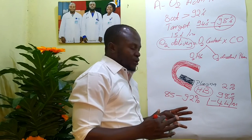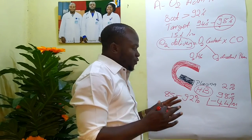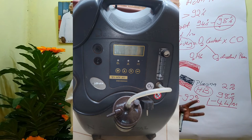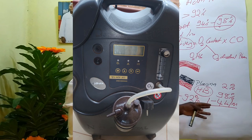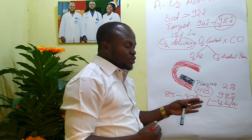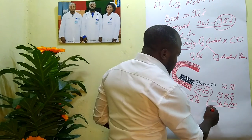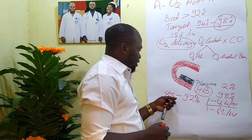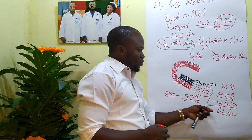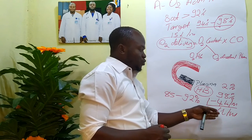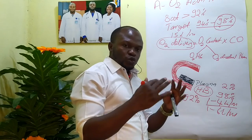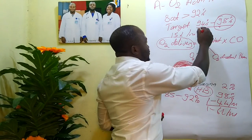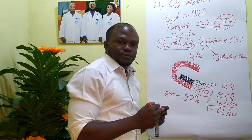Remember, the commonest source of oxygen in our facilities is the oxygen concentrator — in health centers, integrated health centers, and clinics. The oxygen concentrator can only give 1 to 6 liters per minute. So if a patient has a saturation of 85% to 92%, consider administering 1 to 6 liters per minute. You can use the oxygen concentrator and nasal prongs to achieve the target of 94% to 98%.